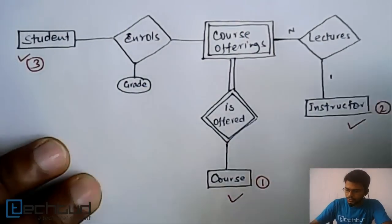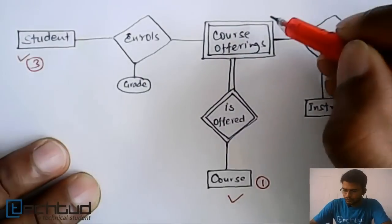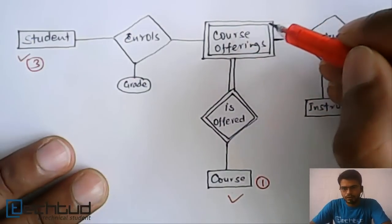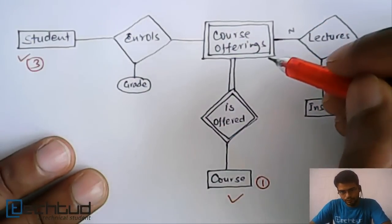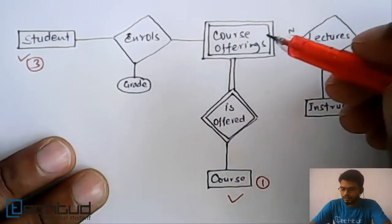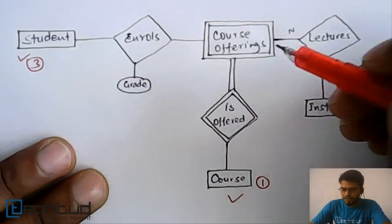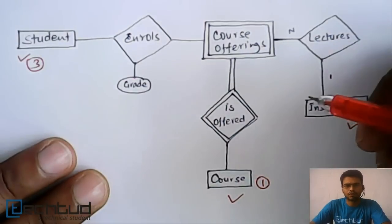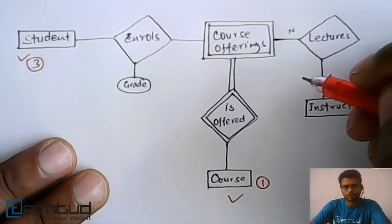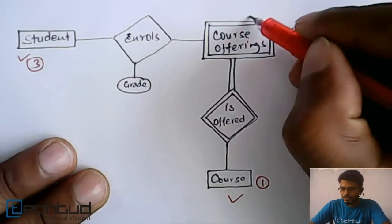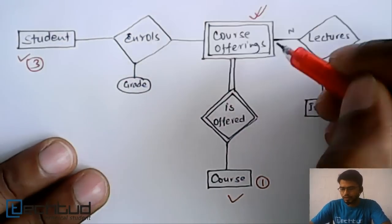Now let's go to the weak entity. We know from the previous conceptual lecture that a weak entity also requires one table to store. So this weak entity will require one table.